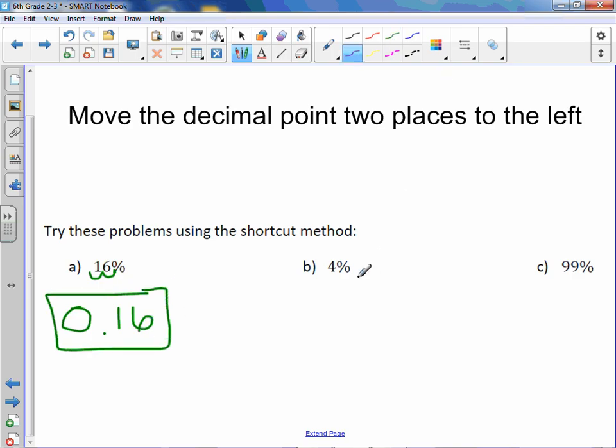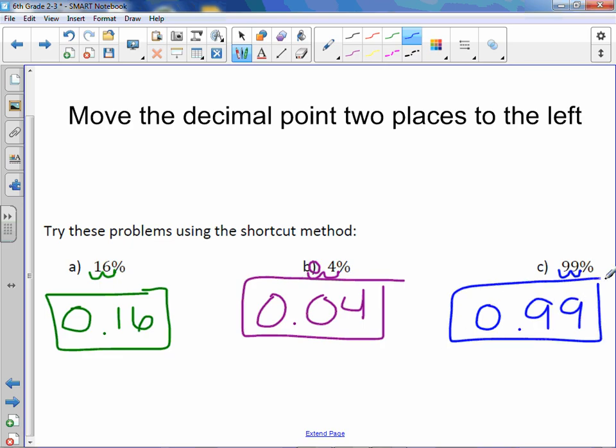Letter B: 4%. Your decimal is at the end, move it 2 to the left. So now you have two methods of changing percents to decimals.